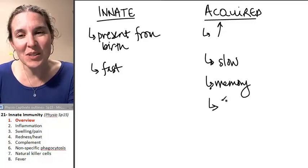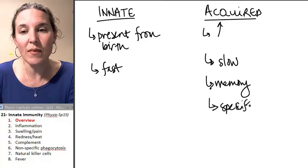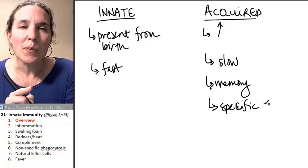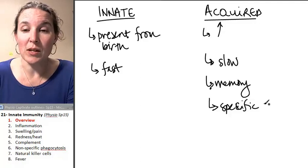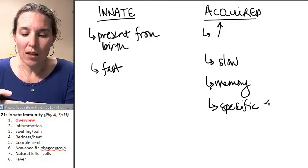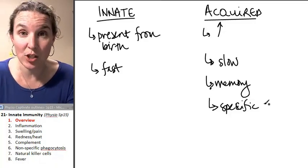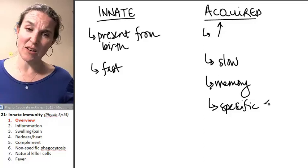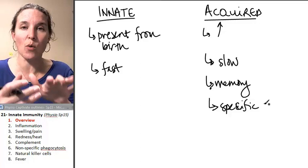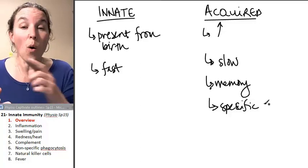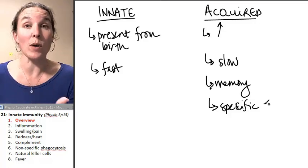And along those lines, the acquired immune response is very, very specific. And what that means is that a bad guy, an antigen, something that stimulates the immune response, triggers the acquired immune response to a very specific antigen. So basically there's like a million different possible responses, and each part of the acquired immune response is only going to respond to one antigen and only that one specific antigen.